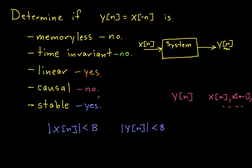Well, there you have it, an example of how to determine if a system is memoryless, time-invariant, linear, causal, and stable. So hopefully this was helpful, and thanks for watching.